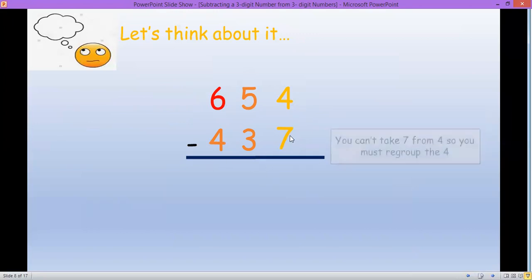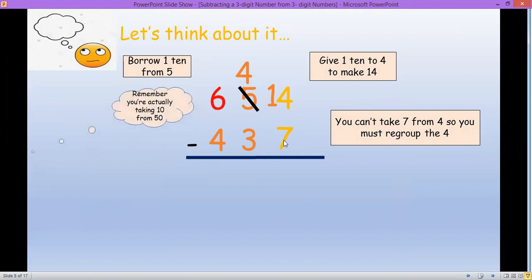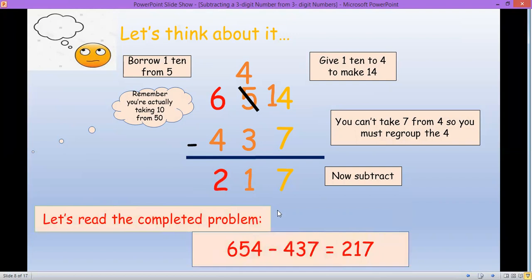Again, we cannot take away seven from four, so we must regroup four. It will borrow one from five. But actually, four is borrowing one ten from five. So four becomes 14 and five becomes four. 14 minus seven is seven, and then four minus three is one, and six minus four is two. So 654 minus 437 is 217.